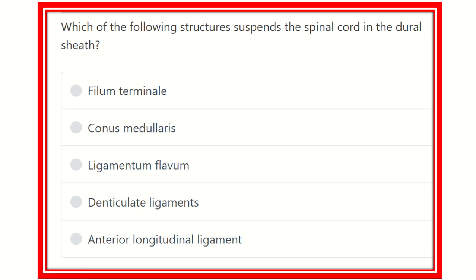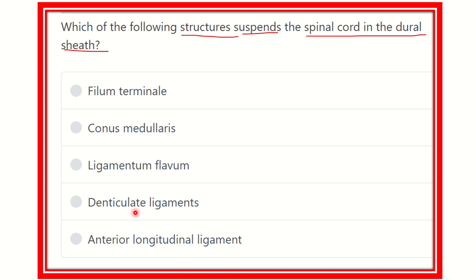Welcome to another question and answer session. Which of the following structures suspend the spinal cord in the dural sheet? The answering options are: filum terminale, conus medullaris, ligamentum flavum, denticulate ligaments, and anterior longitudinal ligament.